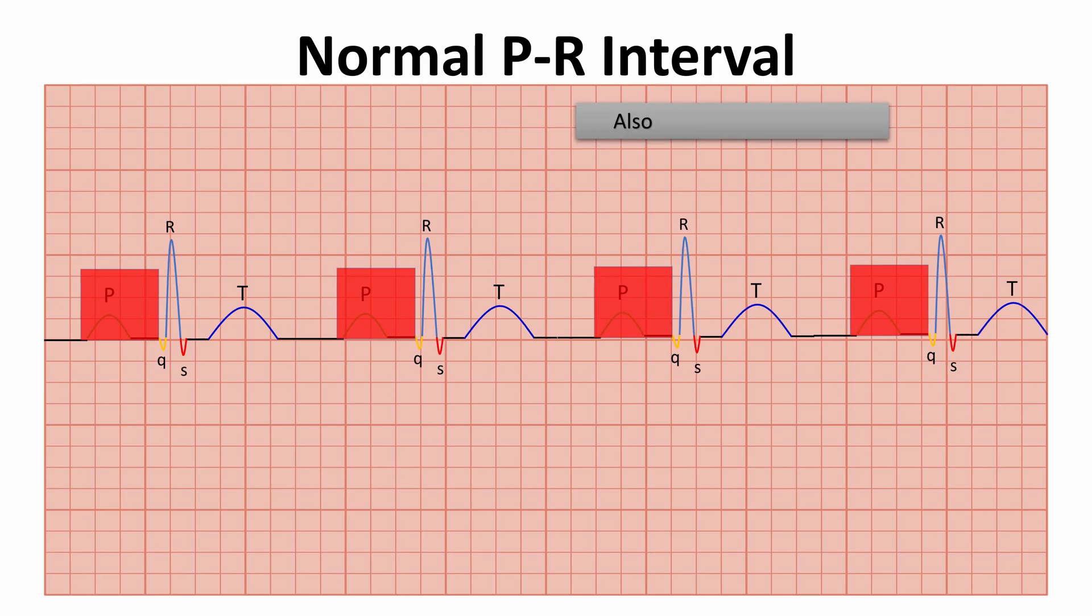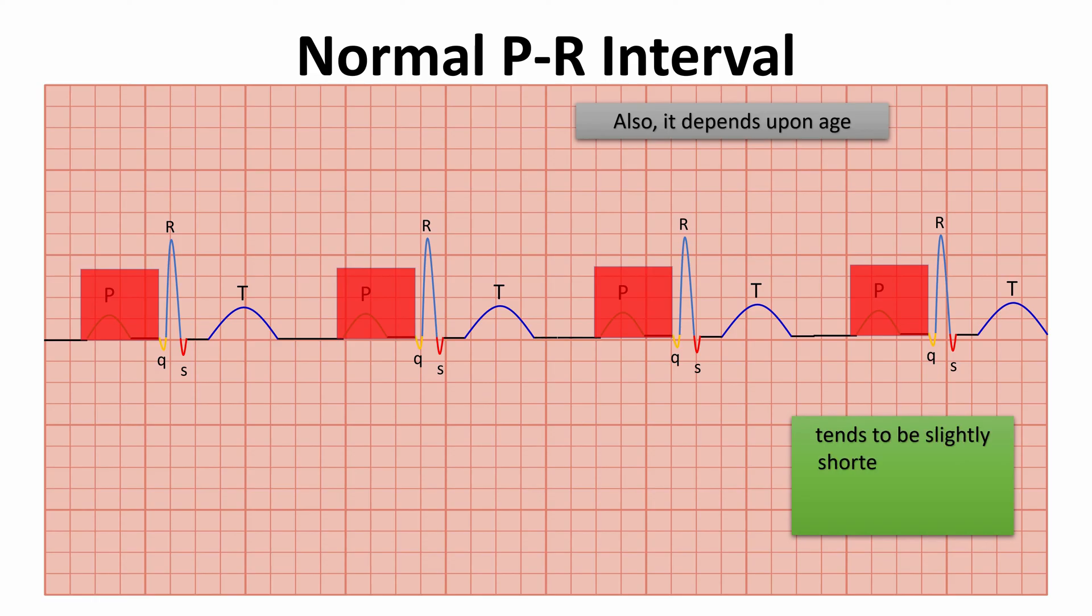The PR interval tends to be slightly shorter in children, with an upper limit of 0.18 seconds or 4.5 small squares, and slightly longer in elderly persons, with an upper limit of 0.22 seconds or 5.5 small squares.